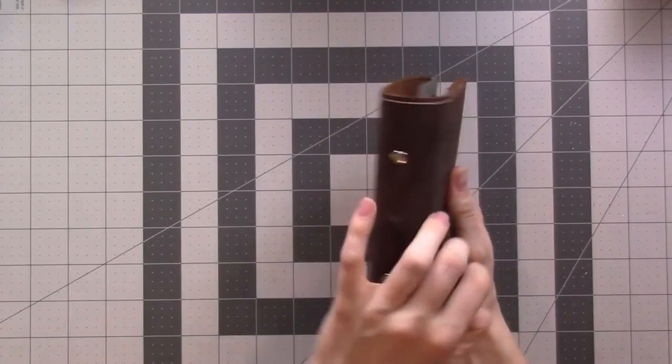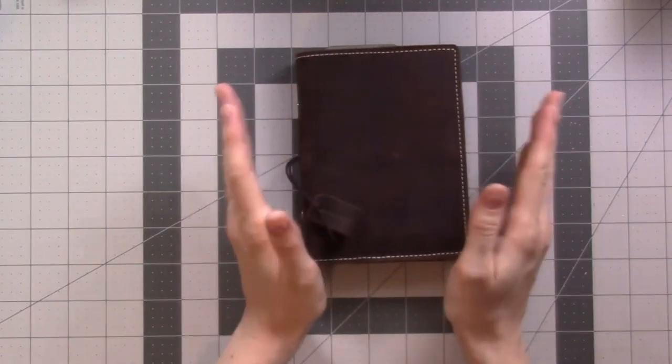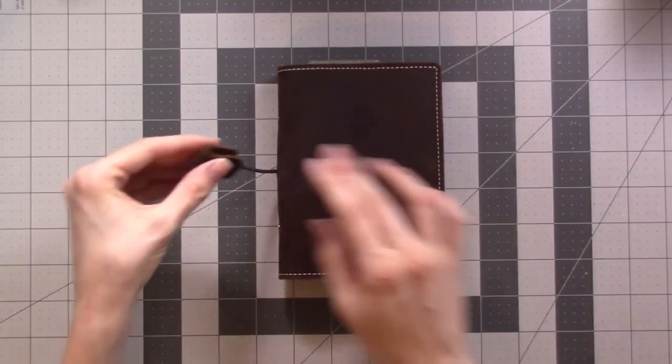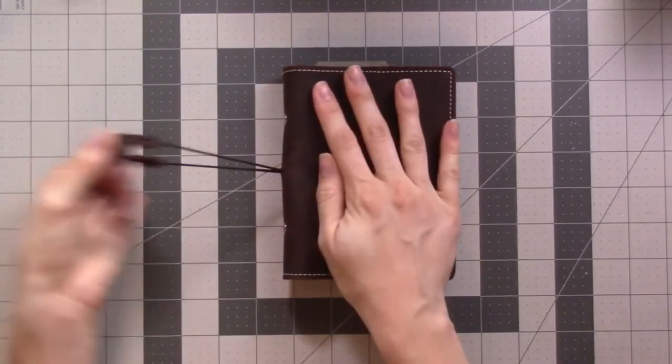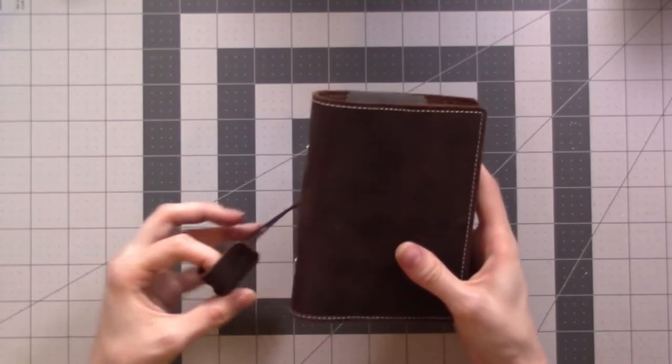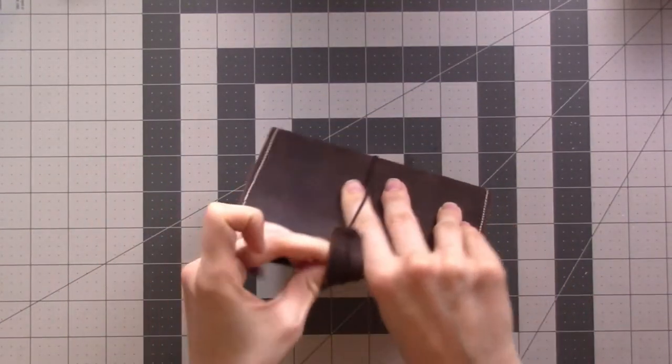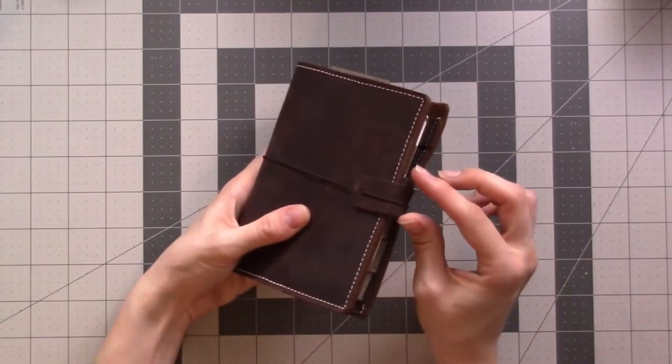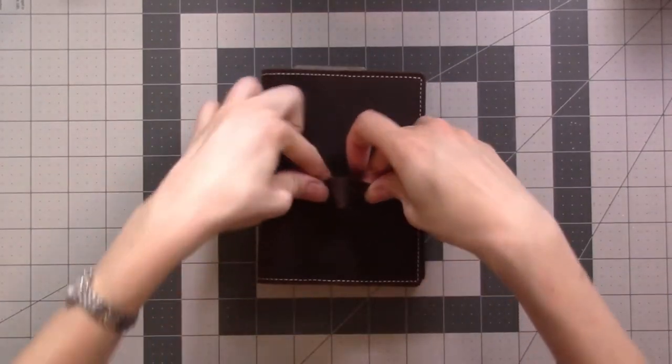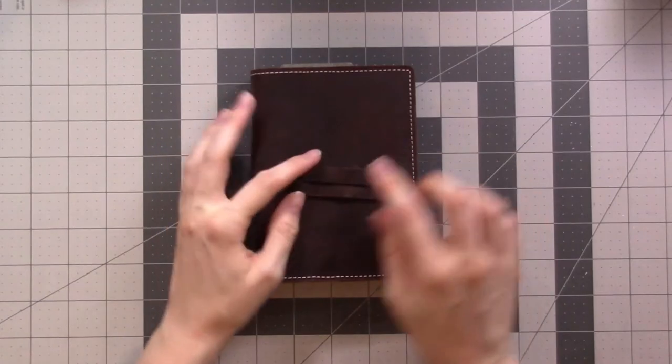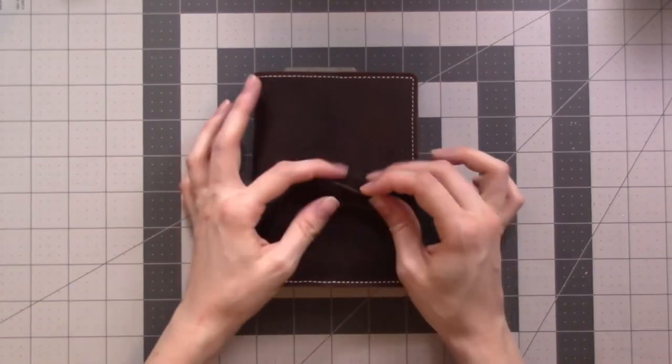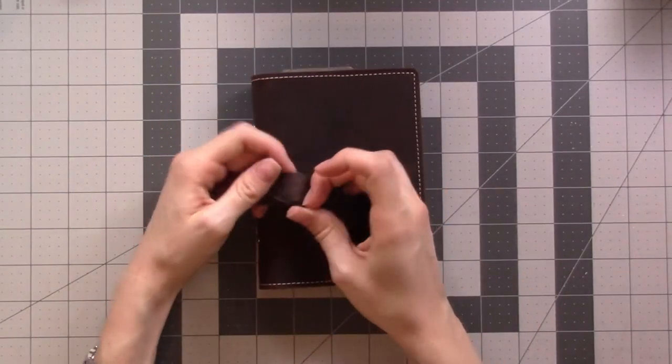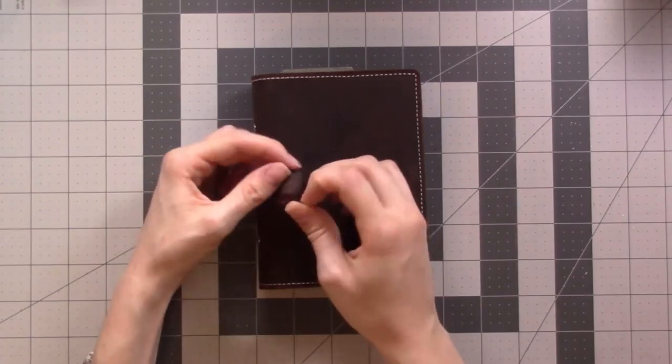There's rivets here that hold the rings in place, but what's different from this compared to like a lot of Filofaxes is instead of having a closure that goes around here and snaps on the front, it's got this elastic that wraps around just like a traveler's notebook would. It's the same as you'd see in a Filofax Domino I believe, but then it's got this little piece of leather that just kind of protects the edge.